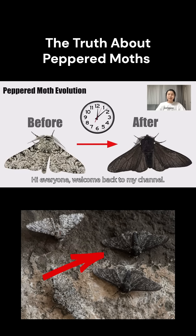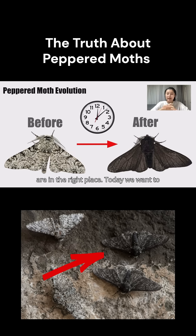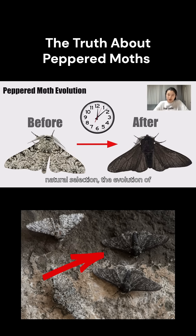Hi everyone, welcome back to my channel. Now if you're fascinated about how animals adapt to their environment through evolutionary biology, then you are in the right place. Today we want to look into one of the most iconic cases of natural selection: the evolution of the peppered moth during the English Industrial Revolution period.